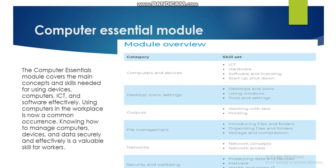Another module is Computer Essentials. The Computer Essentials module covers the main concepts and skills needed for using devices, computers, ICT, and software effectively. Using computers in the workplace is now a common occurrence. Knowing how to manage computers, devices, and data securely and effectively is a valuable skill. With this module, you will have an introduction to computers, ICT, software, how to manage your files, networks, network concepts, network access, different types of networks, and security and well-being — where we discuss how to protect your computer, how to be aware of malware, health and green IT.